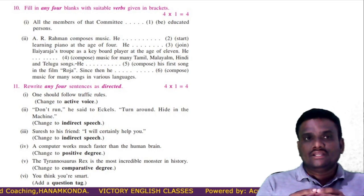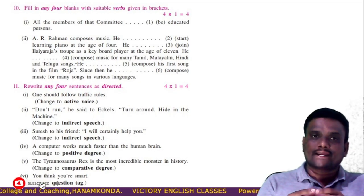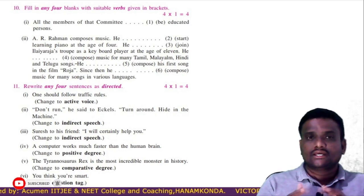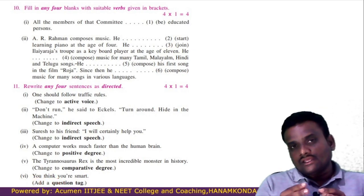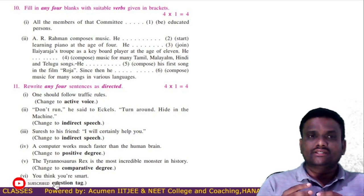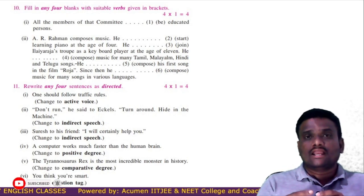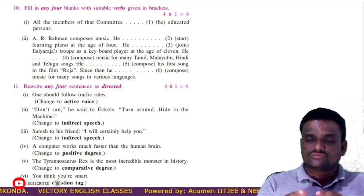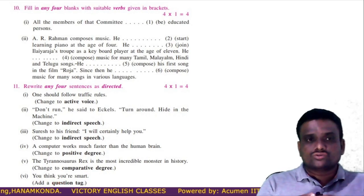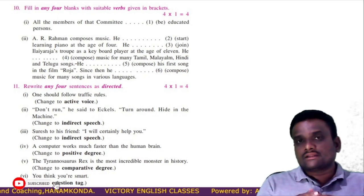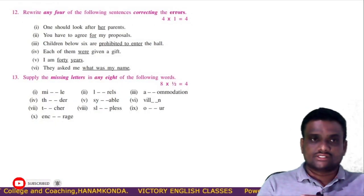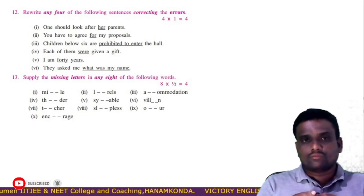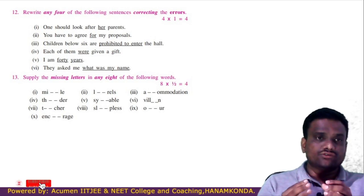The 10th bit is filling any 4 blanks with suitable words given in brackets — this is about tenses. If you learn the tenses correctly, you will easily get these 4 marks. Here are 6 questions; if you answer 4 of them correctly, you will be awarded 4 marks. The 11th bit is rewriting any 4 sentences as directed — this is transformation of sentences, which also gives you 4 marks. Topics covered are active/passive voice, direct and indirect speech, degrees of comparison, and question tags. The 12th bit is rewriting any 4 of the following sentences by correcting the errors, which can also give you 4 marks — it is based on the 5th module exercises.